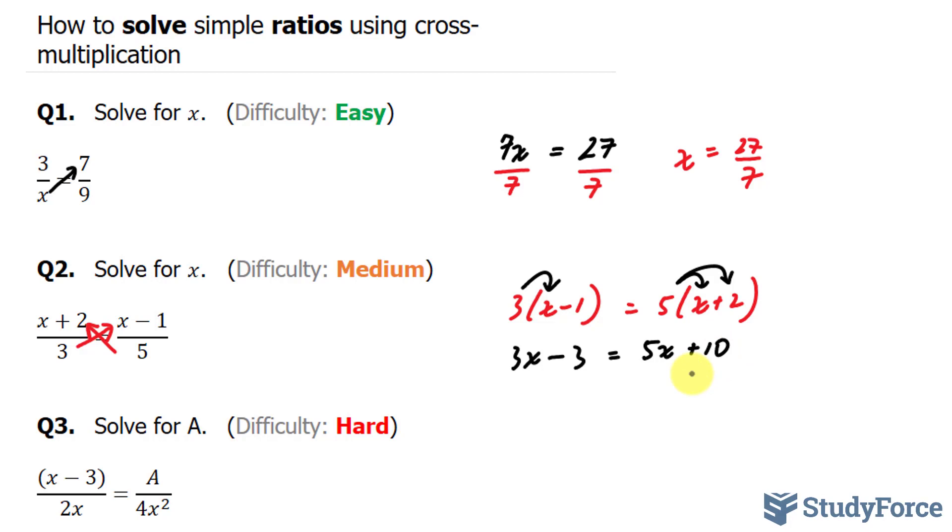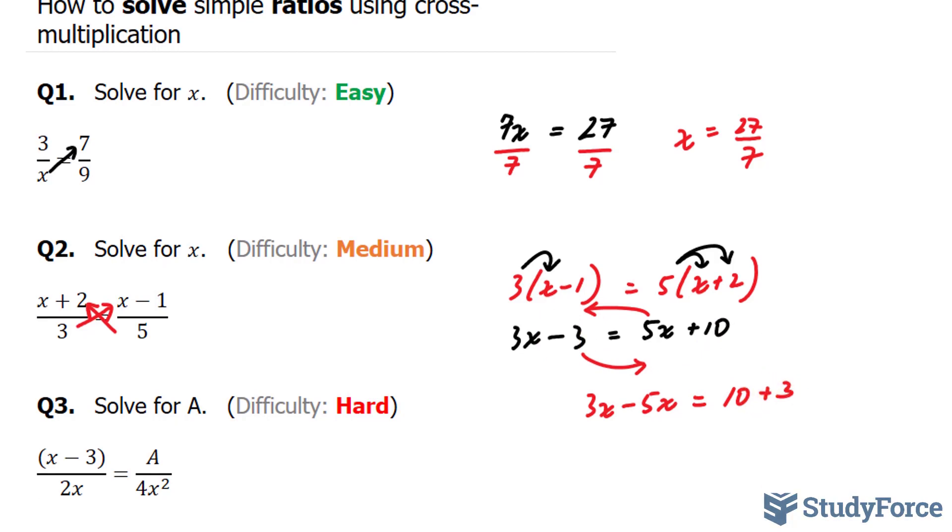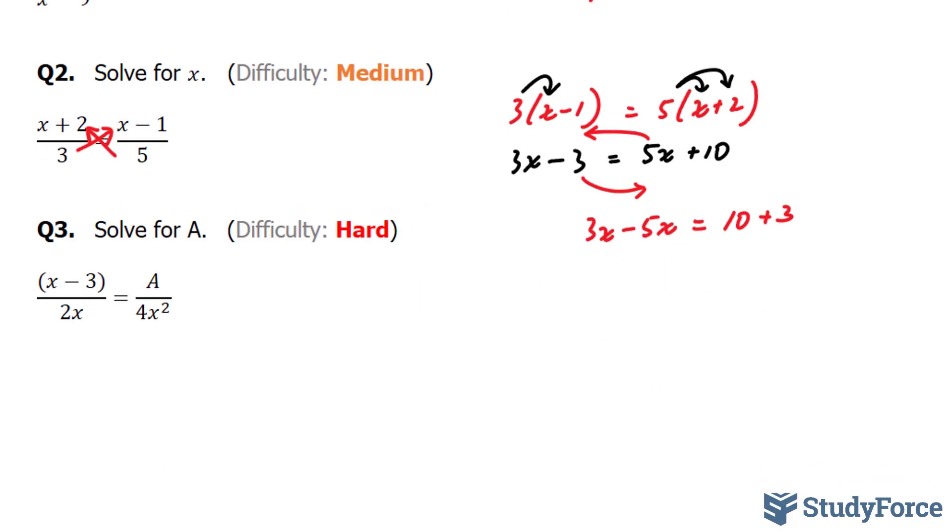We need to use some algebra here to collect like terms. I'll bring this term over to the left side and this term over to the right side, giving us 3x. This part hasn't changed. 5x was previously positive, now it becomes negative because we have changed its position. 10 is still positive and this minus 3 becomes plus 3. Notice that it too changes its symbol. On the right side, we have 13.